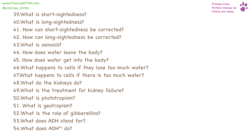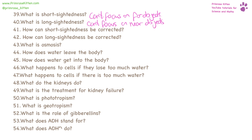Short-sightedness is where you can't focus on distant objects. Long-sightedness is where you can't focus on near objects. Short-sightedness can be corrected with a diverging lens. Long-sightedness is corrected with a converging lens.